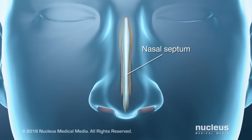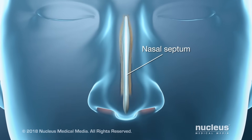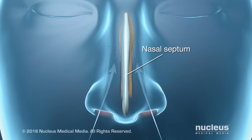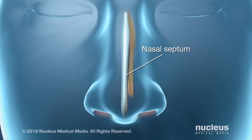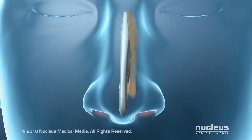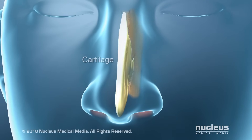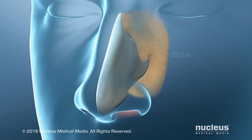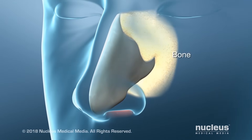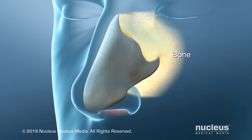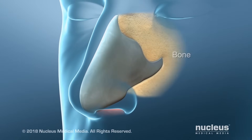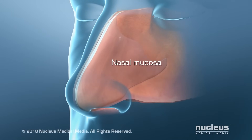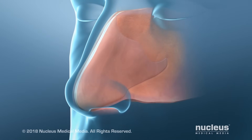Your nasal septum is a thin wall that divides the inside of your nose into right and left sides. It's made of soft, flexible cartilage in the front and bone in the back. A thin layer of tissue called the nasal mucosa covers the septum.